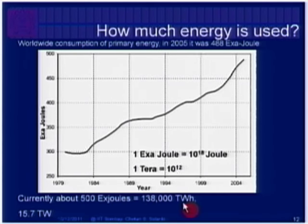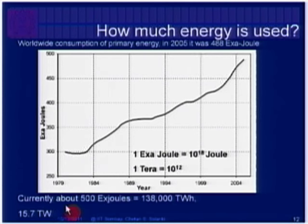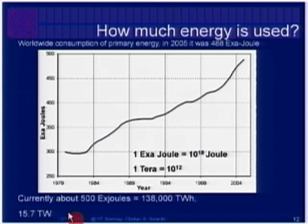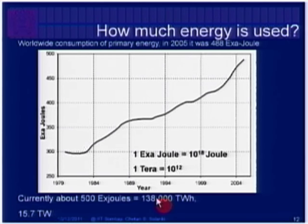Converting to terawatt-hours, the energy consumed is about 138,000 terawatt-hours, equivalent to a power plant of 15.7 terawatts operating continuously throughout the day and year. So basically, what the world needs is a 15.7 terawatt plant working all the time. Eventually we want to compare this number with the solar radiation reaching earth and see how those numbers compare.